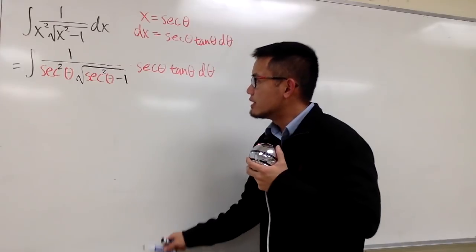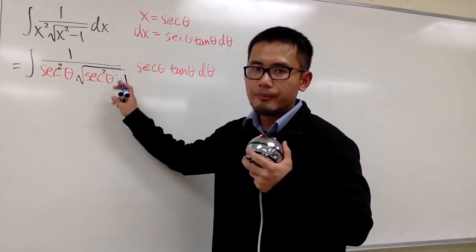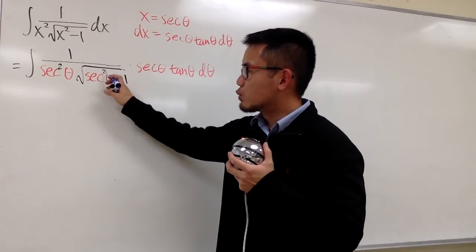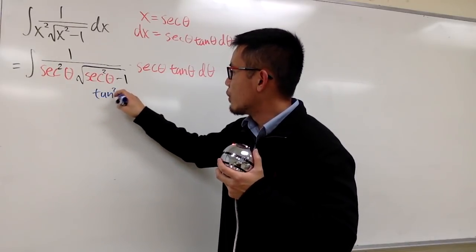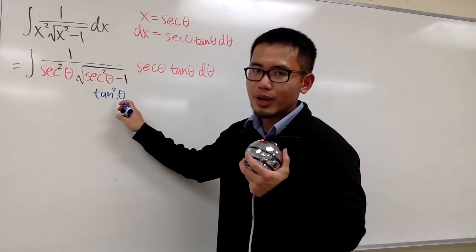And now, let's focus on this square root right here. Inside, we have secant squared theta minus 1. We know this is going to be tangent squared theta inside.